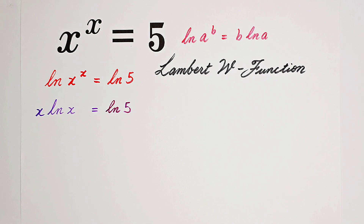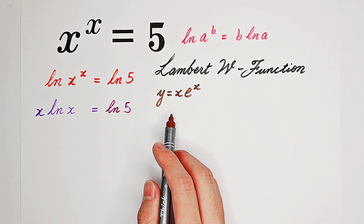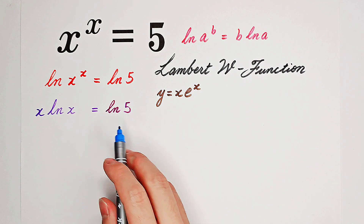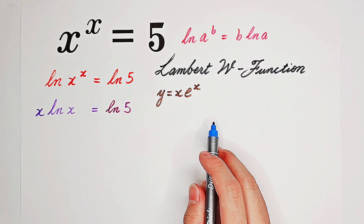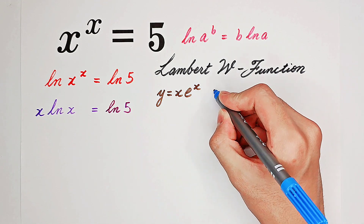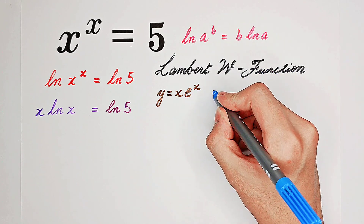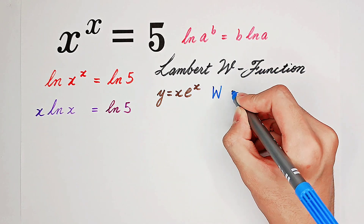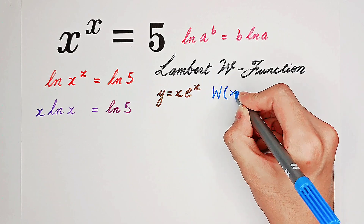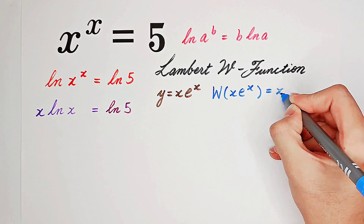What is actually the Lambert W function, or the product logarithm? It is the inverse function of y equals x times e to the power of x. Since this function is not an elementary function, we cannot find its inverse function by basic algebra methods. So it is the Lambert W function. The Lambert W function of x times e to the power of x is just equal to x.